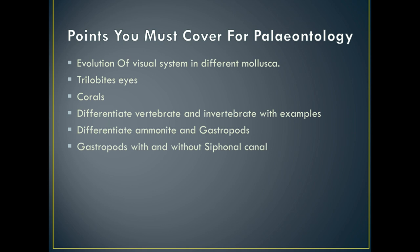Next is corals. From corals you should remember the basic body plan, the chemical nature of the test, mode of life, and these basic concepts. You might also get questions from the coral reef formed by corals in the geomorphology part. While reading Gastropoda, you should remember which species has a siphonal canal and which does not. Next, we have to differentiate between vertebrate and invertebrate with examples, and we should differentiate ammonites and gastropods. If possible, try to distinguish between all phyla of invertebrate fossils.